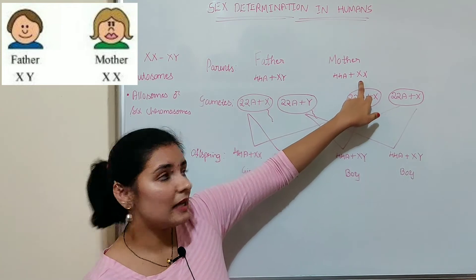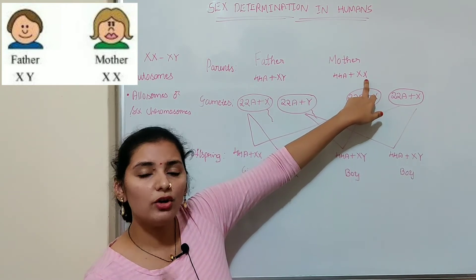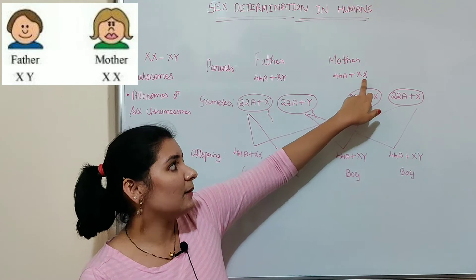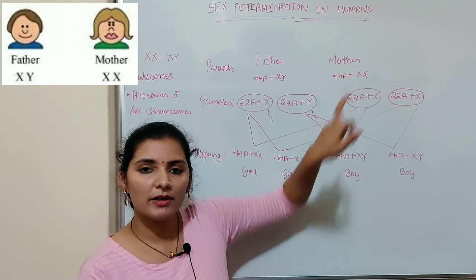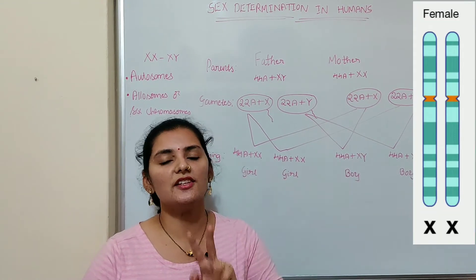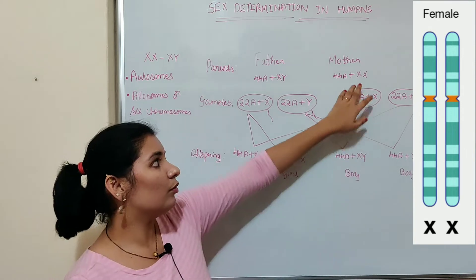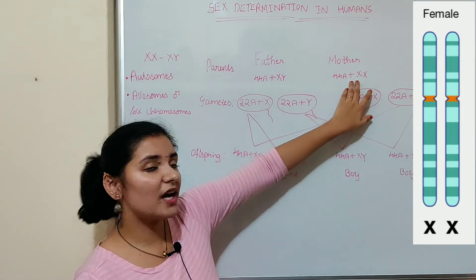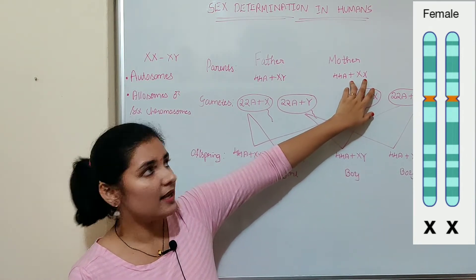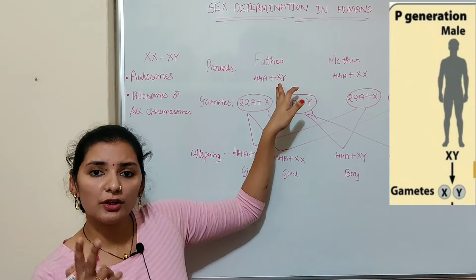Whereas the pair of sex chromosomes present in the female is X and X — two X chromosomes are present. The same name is given because these two chromosomes are structurally the same; that is why both chromosomes are named X and X.